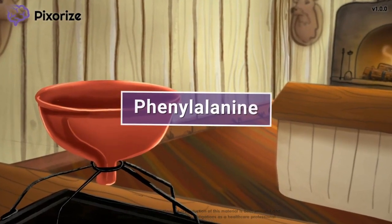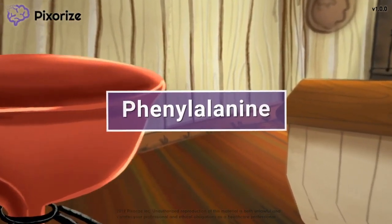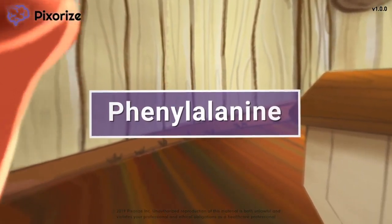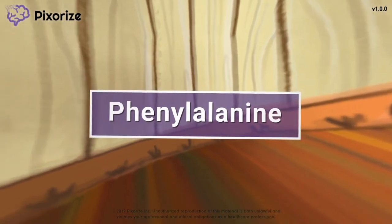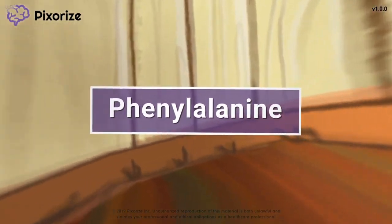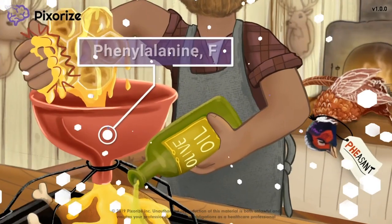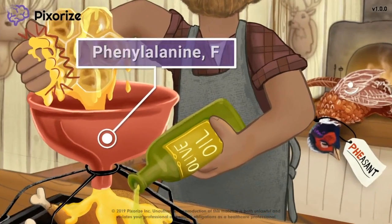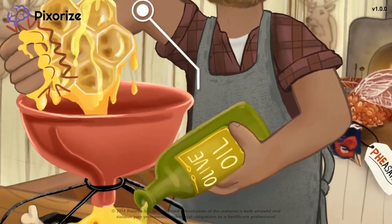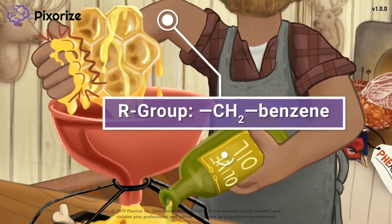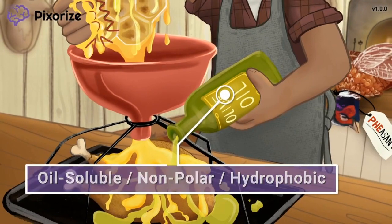Phenylalanine is one of the 20 amino acids that make up proteins in our body. It can be really hard to keep the different amino acids straight in your head, so in this visual mnemonic I'll give you an easy way to remember the chemical structure and properties of phenylalanine so you'll be ready for test day.